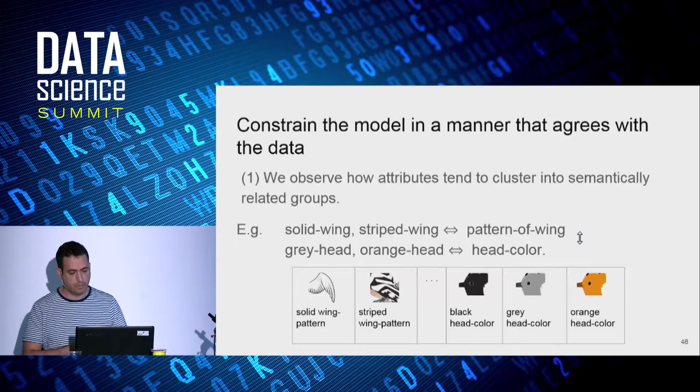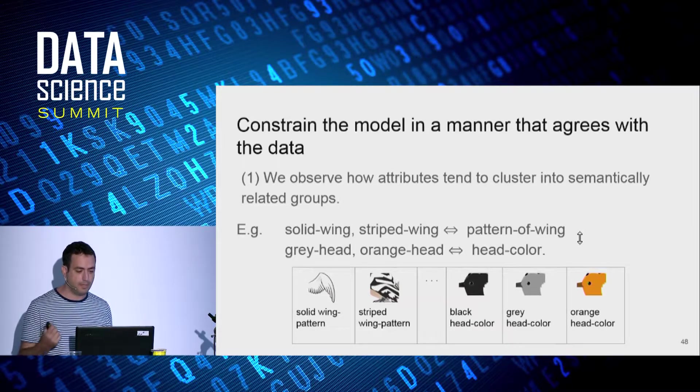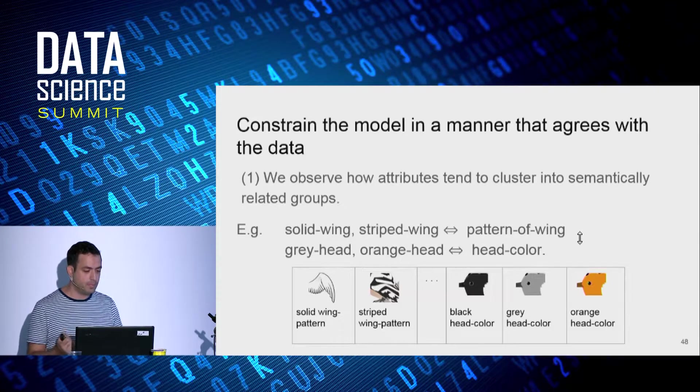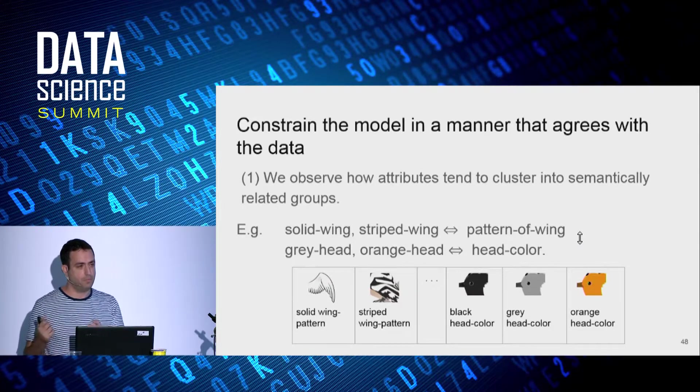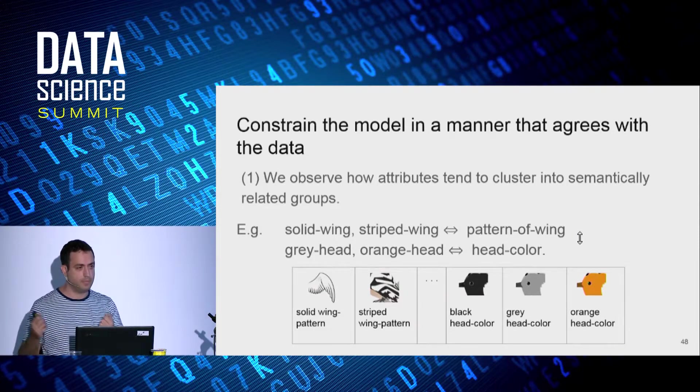So let's look again on the attributes. And we observe how attributes tend to cluster into semantically related groups. Like solid wing or striped wing, they describe the pattern of a wing. And gray head or orange head, they describe the head color.